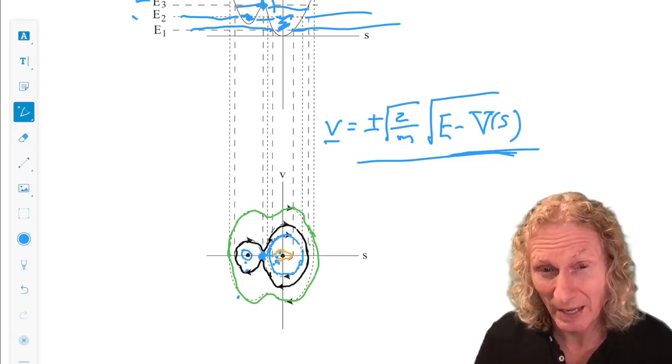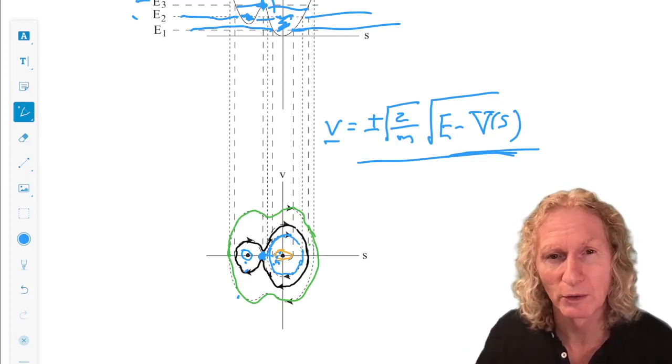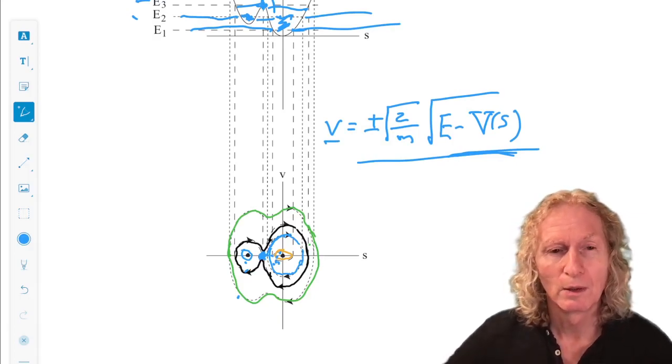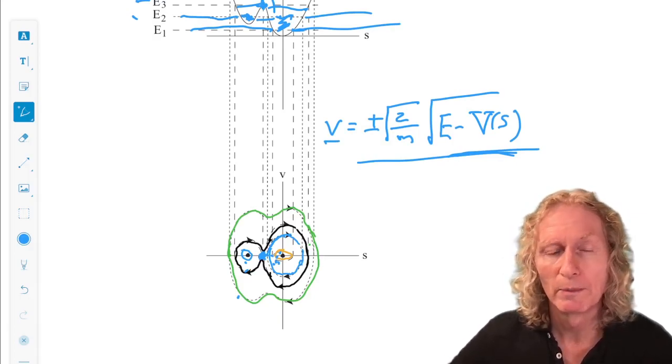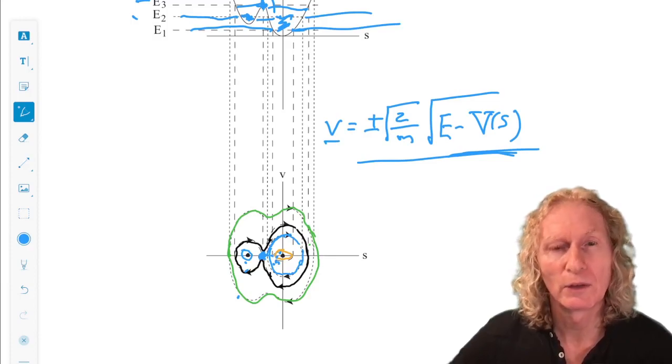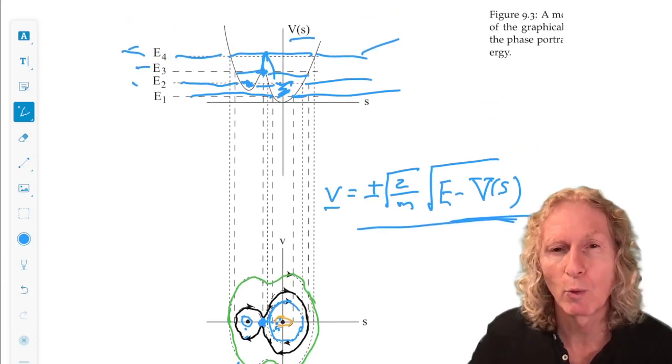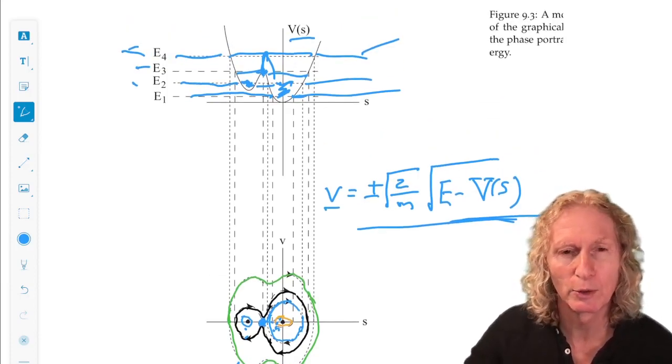They're actually saddle points. Some directions move towards the equilibrium points. Some move away. And local minima are stable, bottom of the well. You may have some intuition for that.